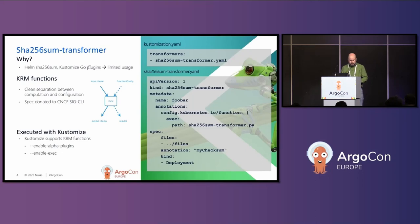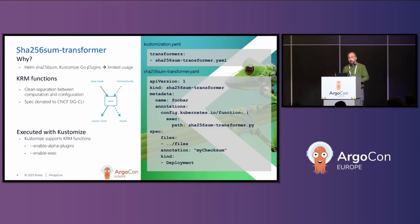So what did I mean by computational transformation? We wanted to do something very simple: inject a checksum into a YAML file. We tried to do that with Helm — it has a function for that — but apparently it doesn't work for Helm dependencies. The same goes for Kustomize Go plugins: very nice, but they are not portable. If Argo changes the Kustomize version, we have to recompile that plugin. That's how we got to KRM functions.